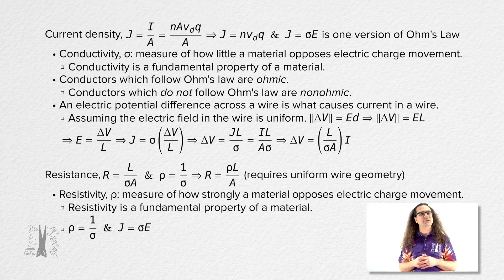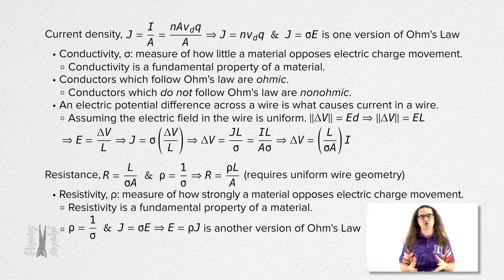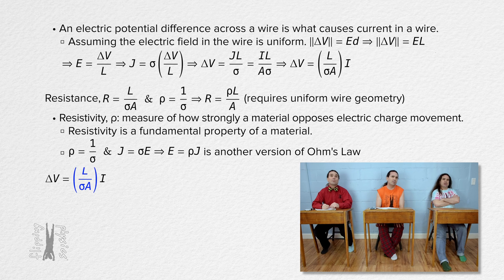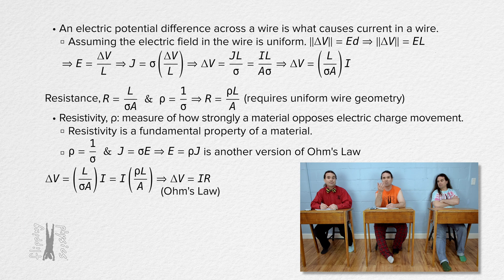Now that we have resistivity, Ohm's law is often given in terms of resistivity instead of conductivity: electric field equals resistivity times current density. That brings us to the more common form of Ohm's law. Bobby, what is the form of Ohm's law which you are more used to working with? Well, we can replace the parenthetical expression with conductivity to the one with resistivity instead, and we get electric potential difference equals current times resistance. Yes, that is the equation for Ohm's law which I am more familiar with.